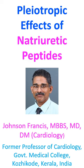The two important natriuretic peptides from the cardiovascular point of view are atrial natriuretic peptide, which is a 28 amino acid polypeptide, and B-type natriuretic peptide, which is a 32 amino acid polypeptide.